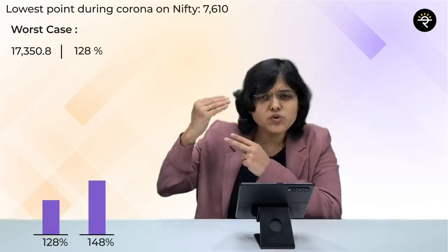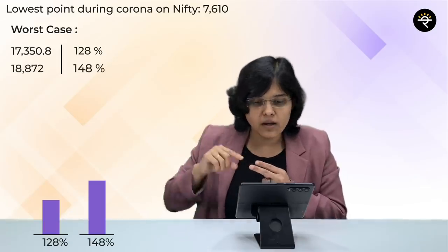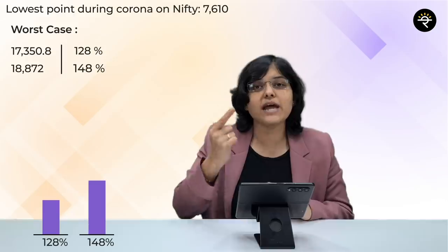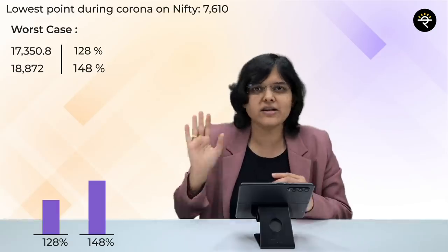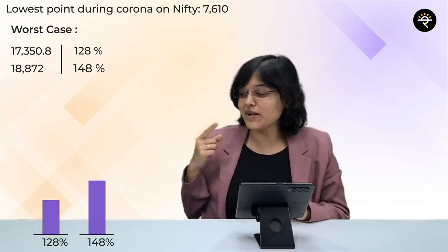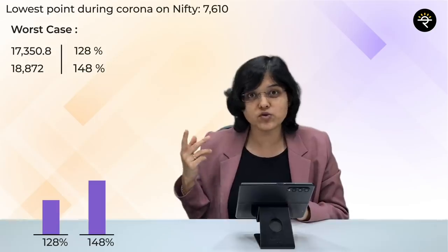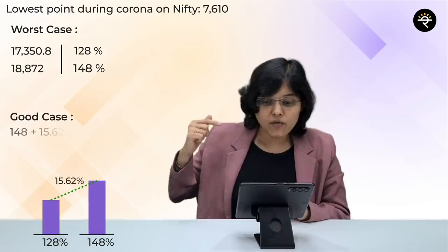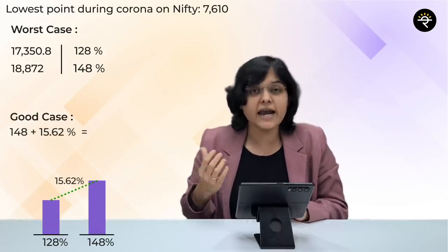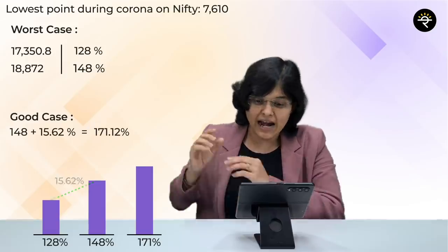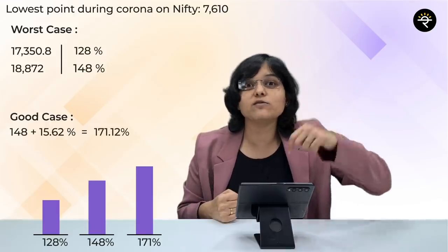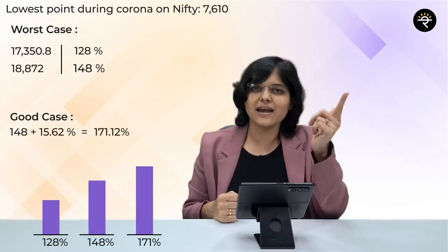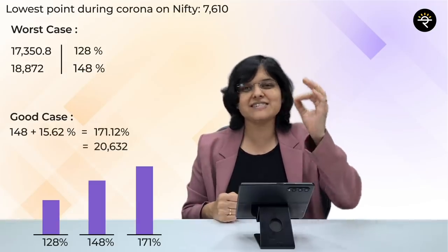Second scenario: if the market jumps by 148% - the 2008 jump - then we can see a target of 18,872 mathematically. As I'm shooting the video, this level is yet to be reached. For the third scenario, adding 15.62% to the previous base of 148% gives a new jump of 171.12%. On a base of 7,610, our Nifty target comes up to 20,632.